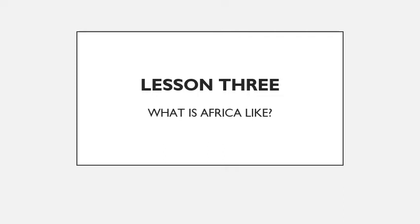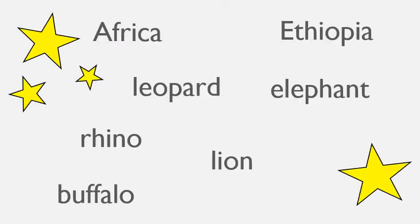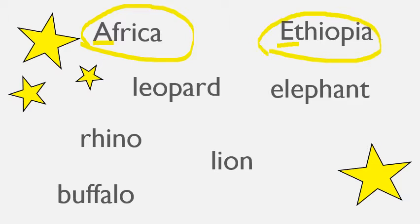This lesson we're going to learn what Africa is like. Here are our star words: Africa — with a capital A because it's the name of a place — Ethiopia, which is a country in Africa, also with a capital. Then leopard, elephant, rhino or rhinoceros, lion, and buffalo. There are five animals, and you'll learn about the big five later.